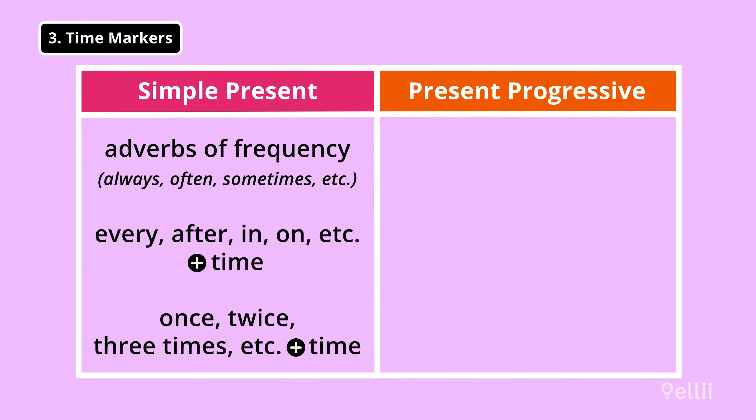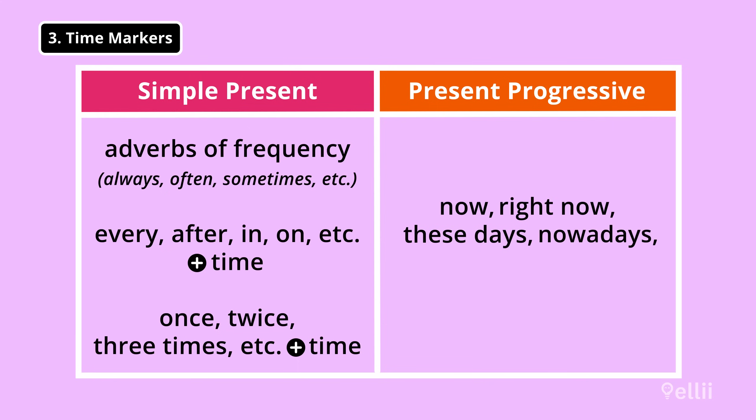Present progressive time markers include words and phrases that all mean now, such as right now, these days, nowadays, at the moment, and currently.